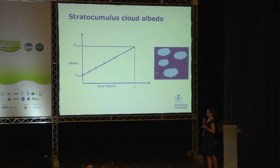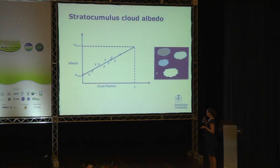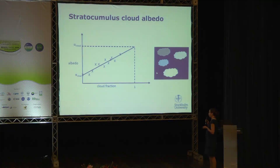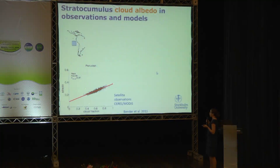For this to work, we need the cloud properties on some spatial and temporal scale to be sufficiently similar. They're not going to be exactly the same — there will be variations, some clouds a little brighter, some a little darker — so we'll get a spread around this straight line. What we're going to do is make use of that spread and see how it is related to aerosol loading.